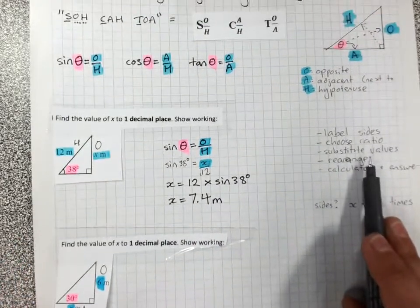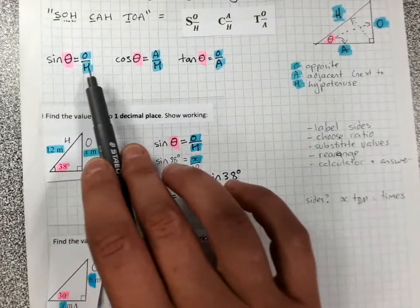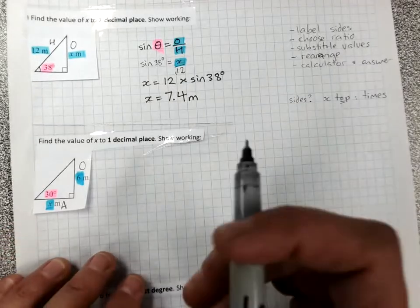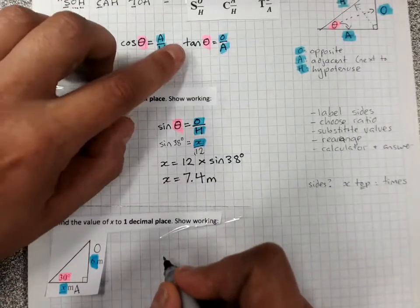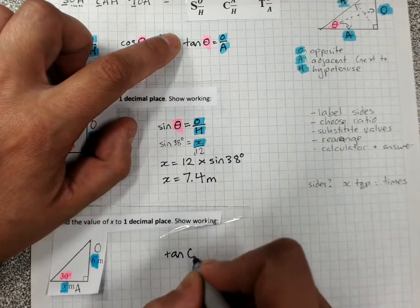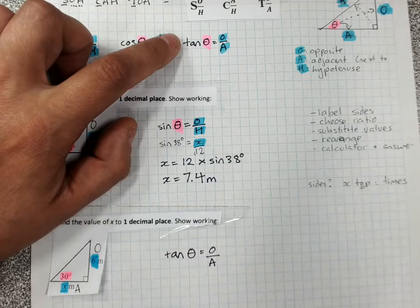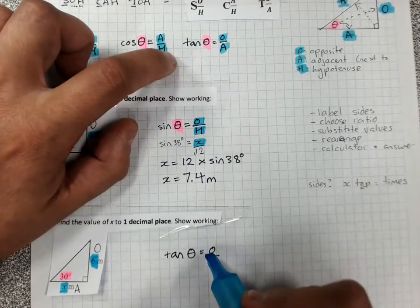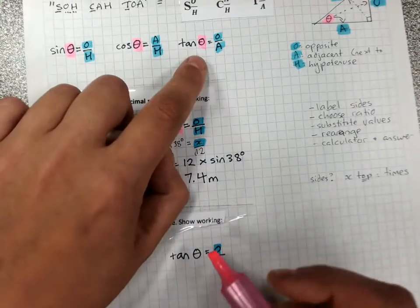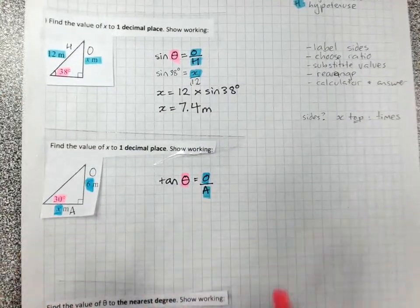Choose the ratio. Blue sides, O and A. Which ratio has O and A? It's tan. We write the ratio. Copy it. Go back to where you wrote it. Tan theta equals O over A. Use your highlighter. Blue for the sides. Blue for the sides. Pink for the angle. It's okay to take it slowly.